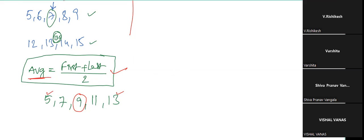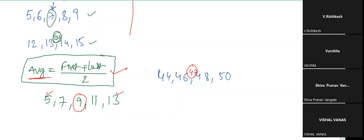Tell me the average for these numbers. The answer is 47. Yes, very good — 47. How many numbers are there? Four. When there are four numbers we cannot get the middle number directly, so we take the two middle numbers. The average will be between the second and third numbers. The given series is even, but our answer is an odd number: 47.